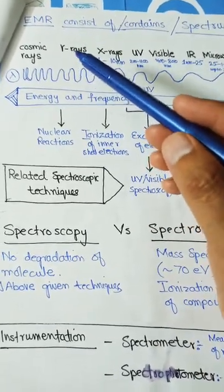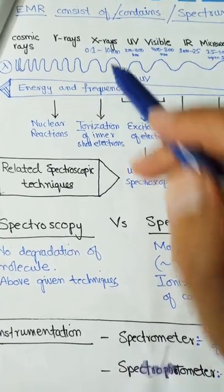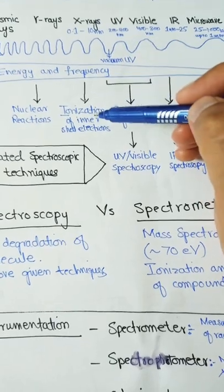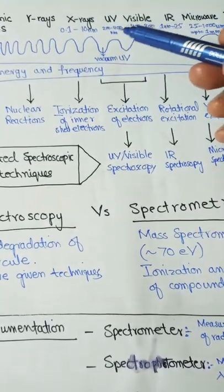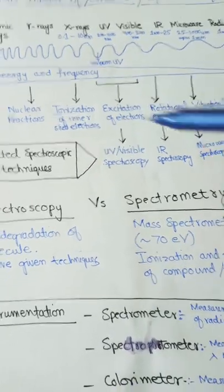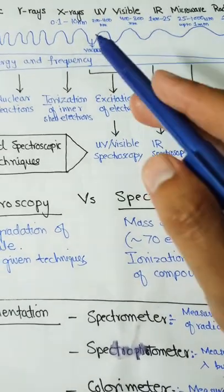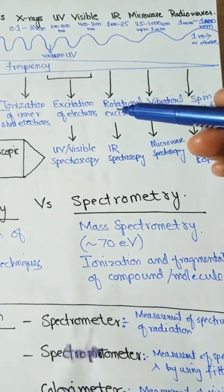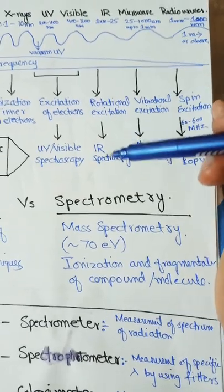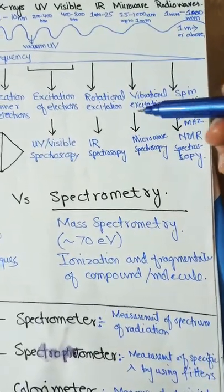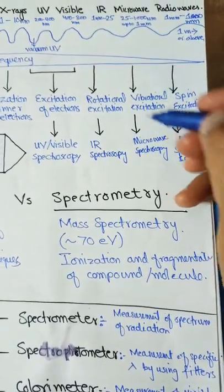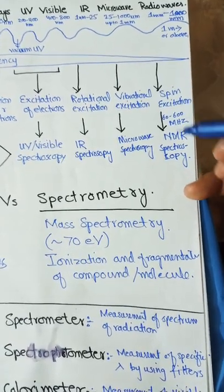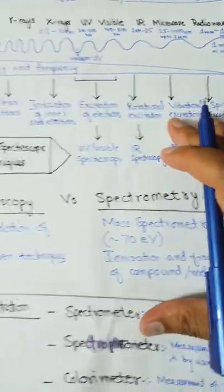Gamma rays are important in nuclear reactions — they penetrate into the nucleus and affect nuclear subatomic particles. X-rays cause ionization of inner electrons in an atom. UV and visible radiation cause excitation of electrons, which is used in UV-visible spectroscopy for electronic transitions. Infrared causes vibrational excitation of molecules, used in IR spectroscopy. Microwaves cause rotational excitation, used in microwave spectroscopy. Radio waves cause spin excitation, used in NMR (nuclear magnetic resonance) spectroscopy.